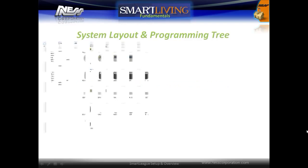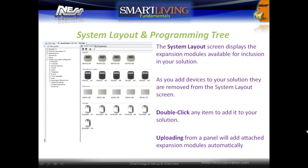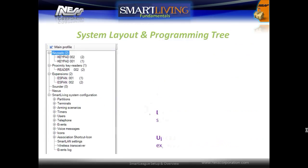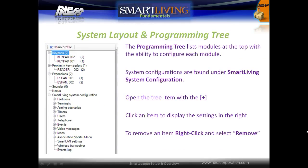The system layout screen displays modules available for inclusion in your solution. As you add devices to your solution, they are removed from the system layout screen. Double-click any item to manually add it to a solution. Uploading from a panel that has modules installed and enrolled will add attached expansion modules automatically from the system layout. If this page is uploaded and the modules attached to your system are not added to your solution, then they are not enrolled. The programming tree lists modules at the top of the tree with the ability to configure each module. System configurations are found under the SmartLeague system configuration tree. Click on an item to display the settings in the right-hand window. To remove any of the modules, right-click on a module and select Remove.